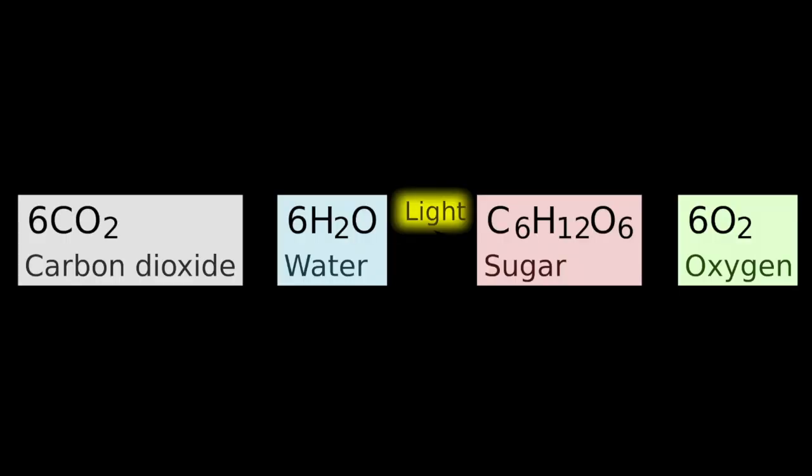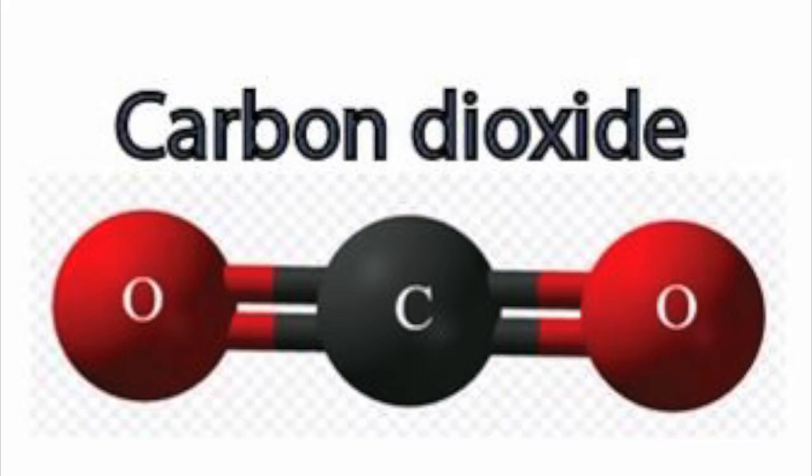The first compound required in the process of photosynthesis is carbon dioxide. The carbon dioxide diffuses through small holes in the underside of the leaf called stomata.